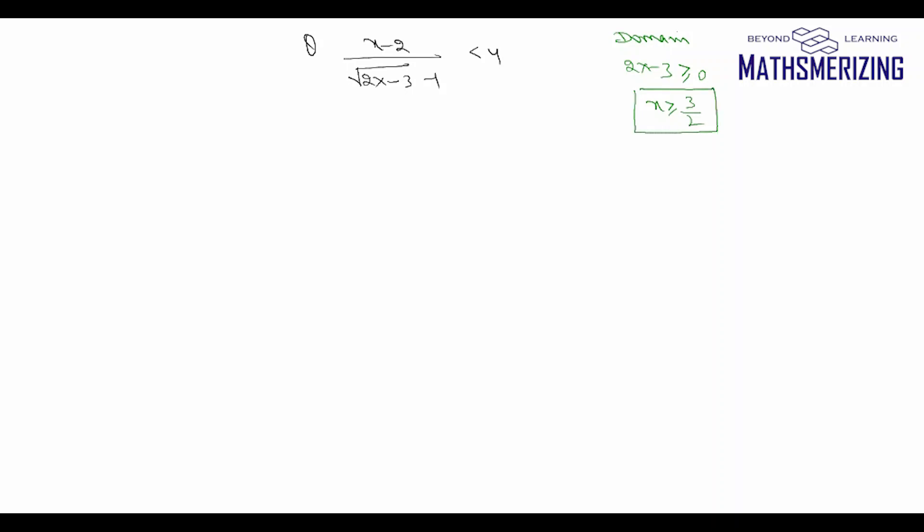Now I'll multiply the numerator and denominator with its conjugate. So I'll multiply numerator and denominator with √(2x - 3) + 1.